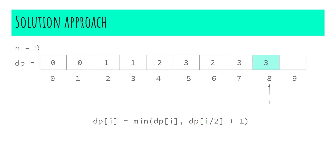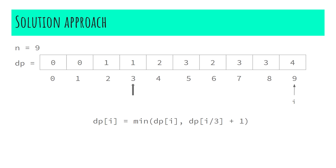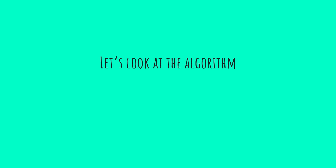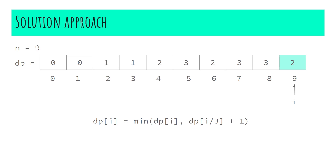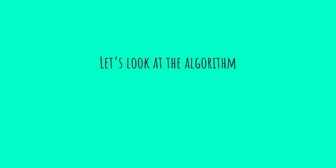Moving to index nine: I first store four. Since nine is divisible by three, I check the minimum of dp[9] and dp[9/3] + 1 = dp[3] + 1 = 2. The minimum is two, so I replace the current value with two. This means to reduce nine to one we take only two steps: divide nine by three, then divide three by three to get one.